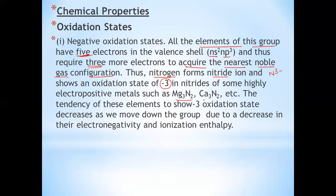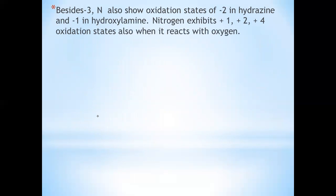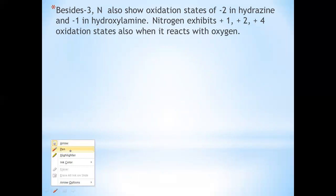Physical properties of group 15 elements: dinitrogen is a diatomic gas while others are solids. Metallic character increases down the group. Nitrogen and phosphorus are non-metals. Arsenic and antimony are metalloids, and bismuth is a metal. Except nitrogen and bismuth, all elements show allotropy. Phosphorus exists in three allotropic forms: white, red, and black. Arsenic and antimony exist in two allotropic forms: yellow and gray.